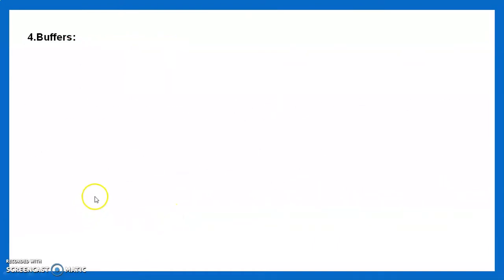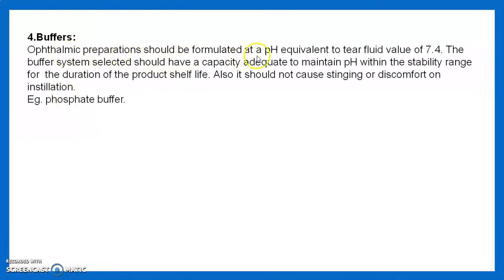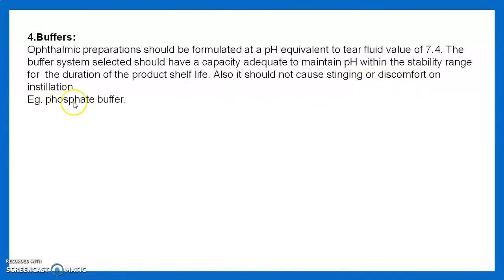Then we see the next formulating agent, which is buffers. Ophthalmic preparations should be formulated at a pH equivalent to the tear fluid value of 7.4. The buffer system selected should have adequate capacity to maintain pH within the stability range for the duration of the product shelf-life. It should not cause stinging or discomfort on installation. For ophthalmic purposes, phosphate buffers are preferred.